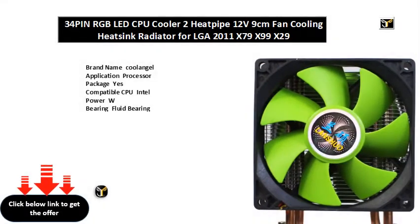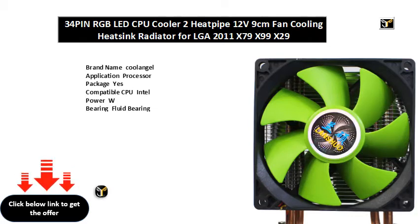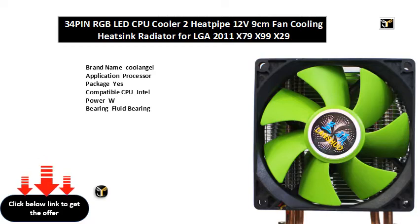Brand name: Cool Angel. Application: Processor Package. Compatible CPU: Intel. Power: W. Bearing: Fluid Bearing. Fan Life: HRS. Fan Speed Control: Plus or Minus Percent RPM. Noise: DBA. Air Volume: CFM. Lines Type: Heatsink. Power Interface: Pin. Heatsink Material: Copper and Aluminum. Fan Size: XX MM. Socket Type: LGA XXX.